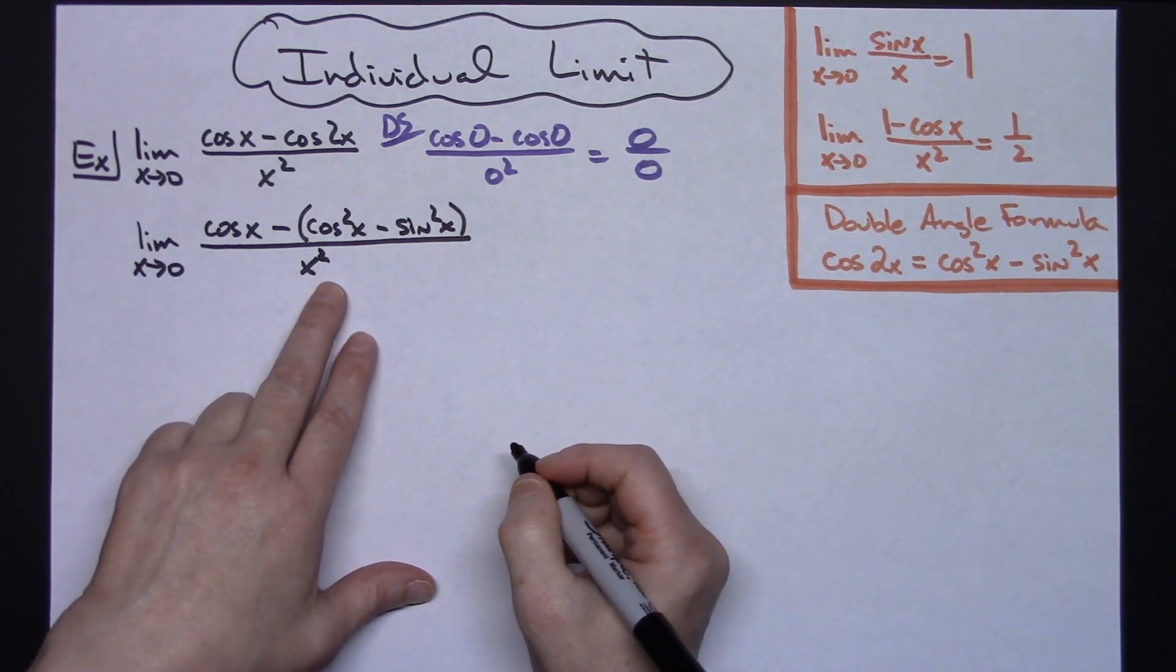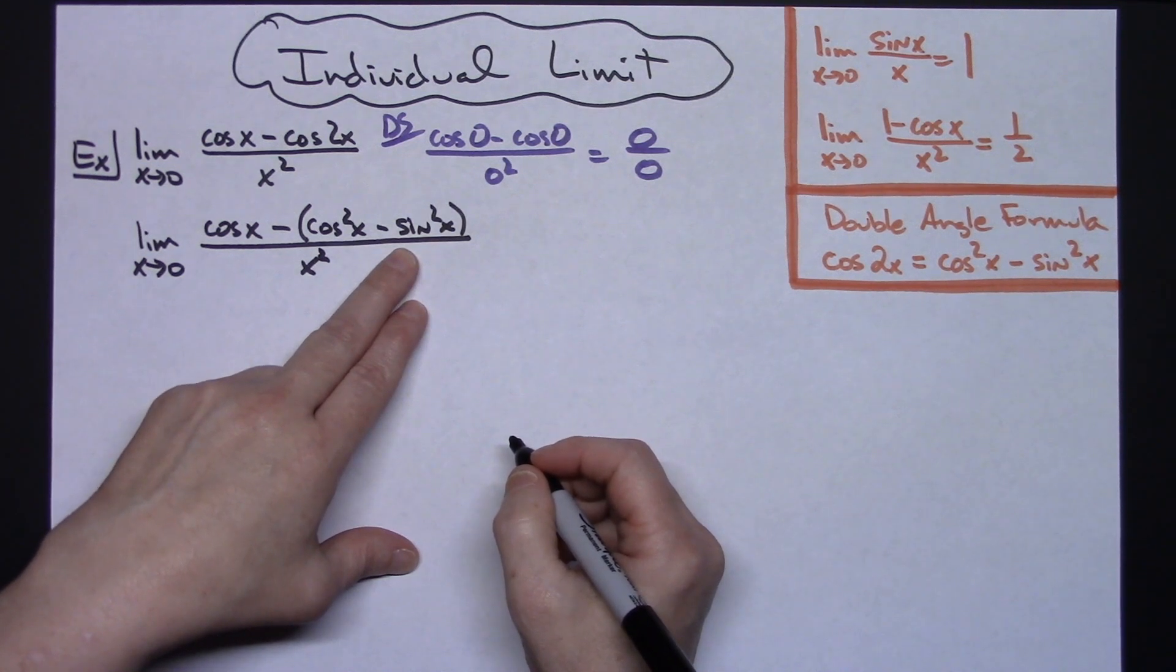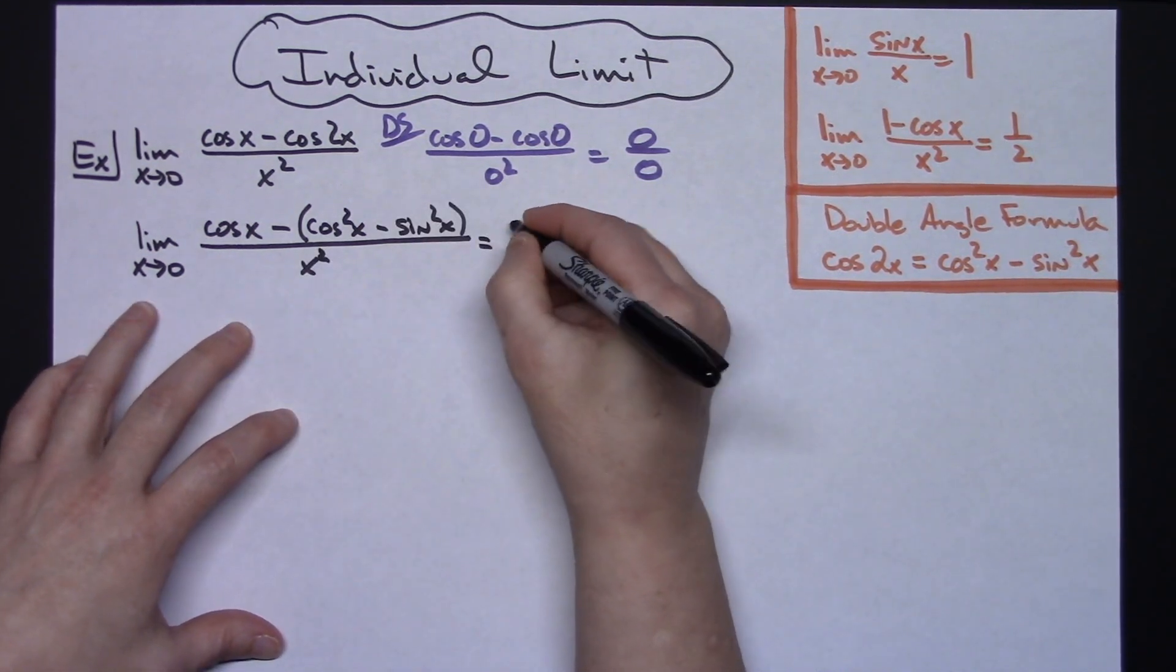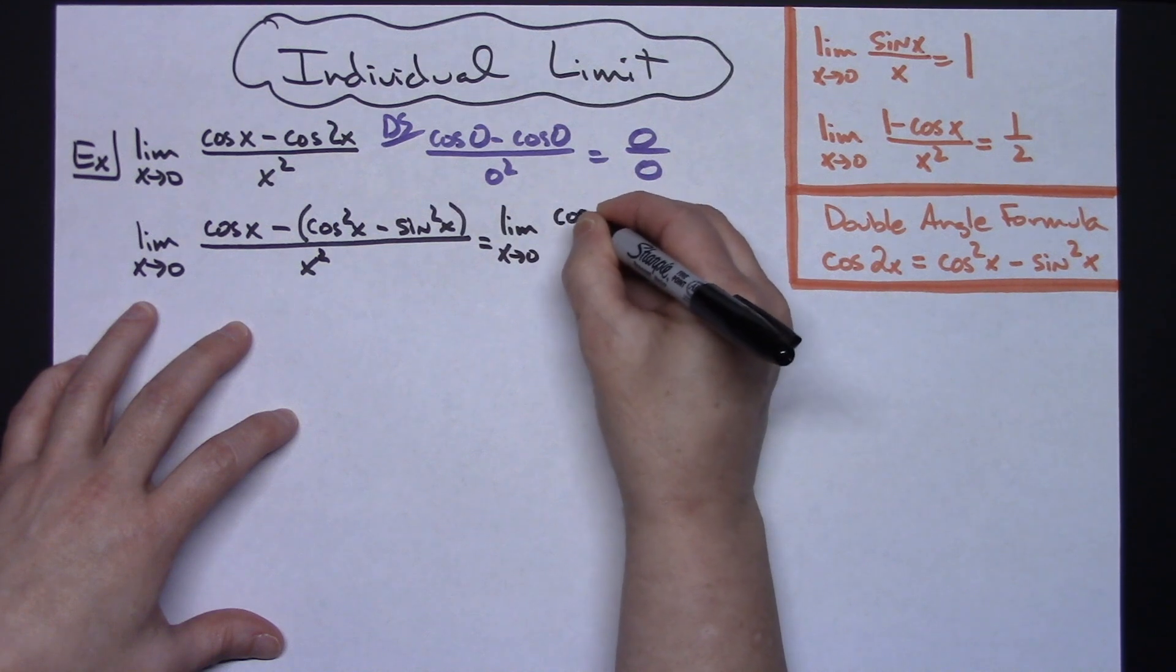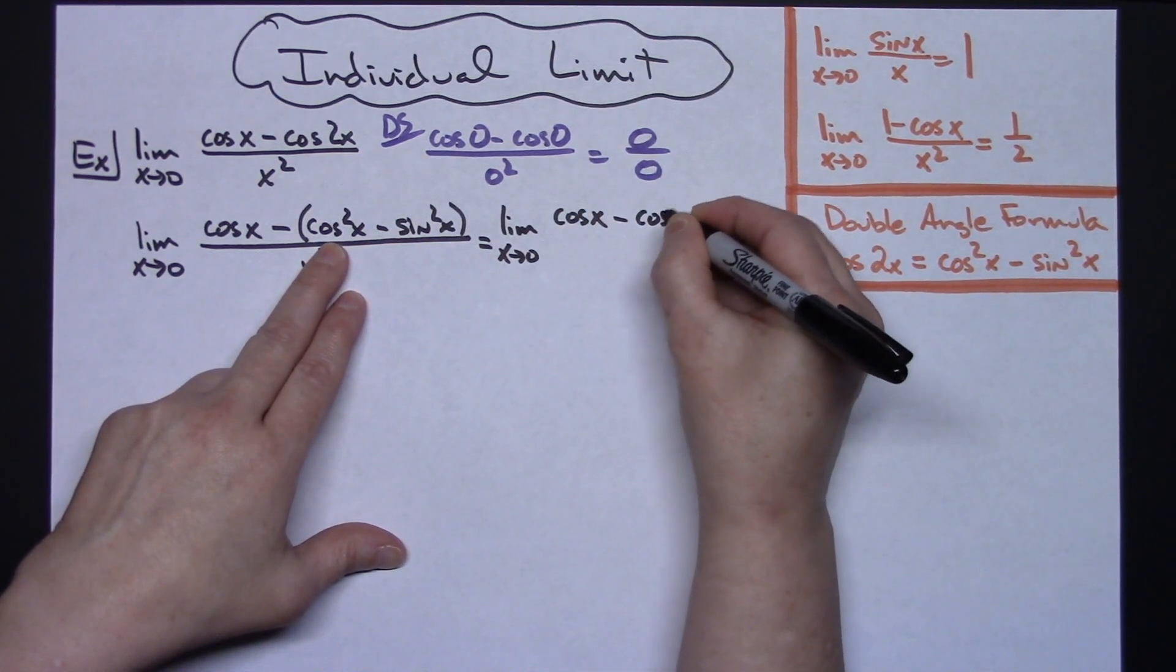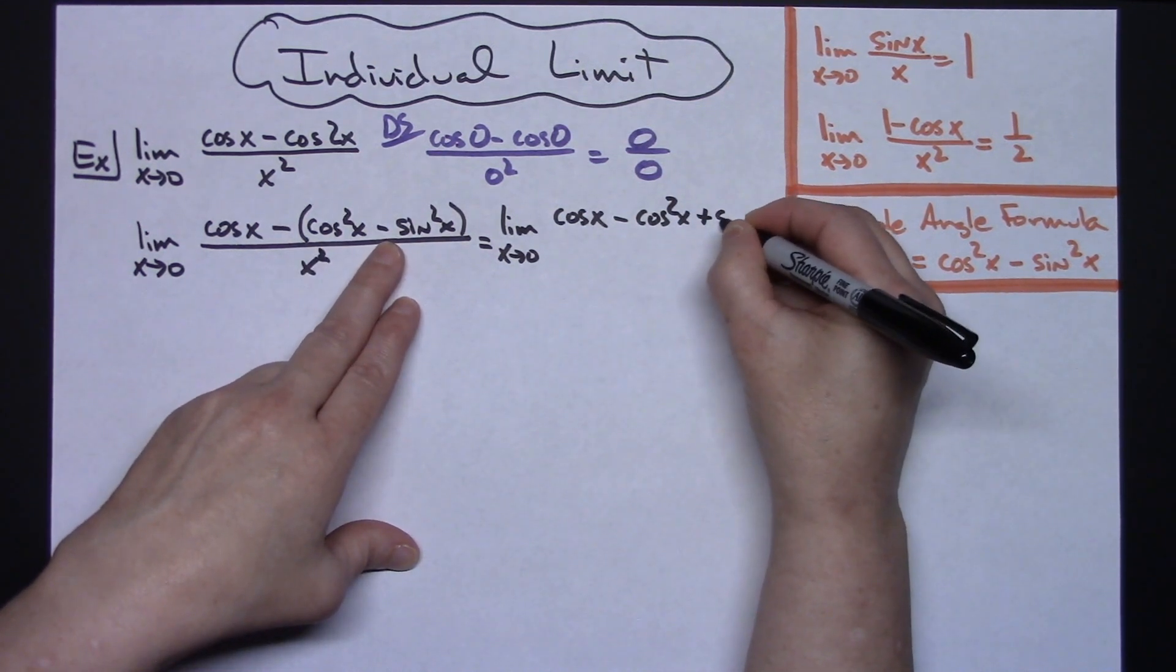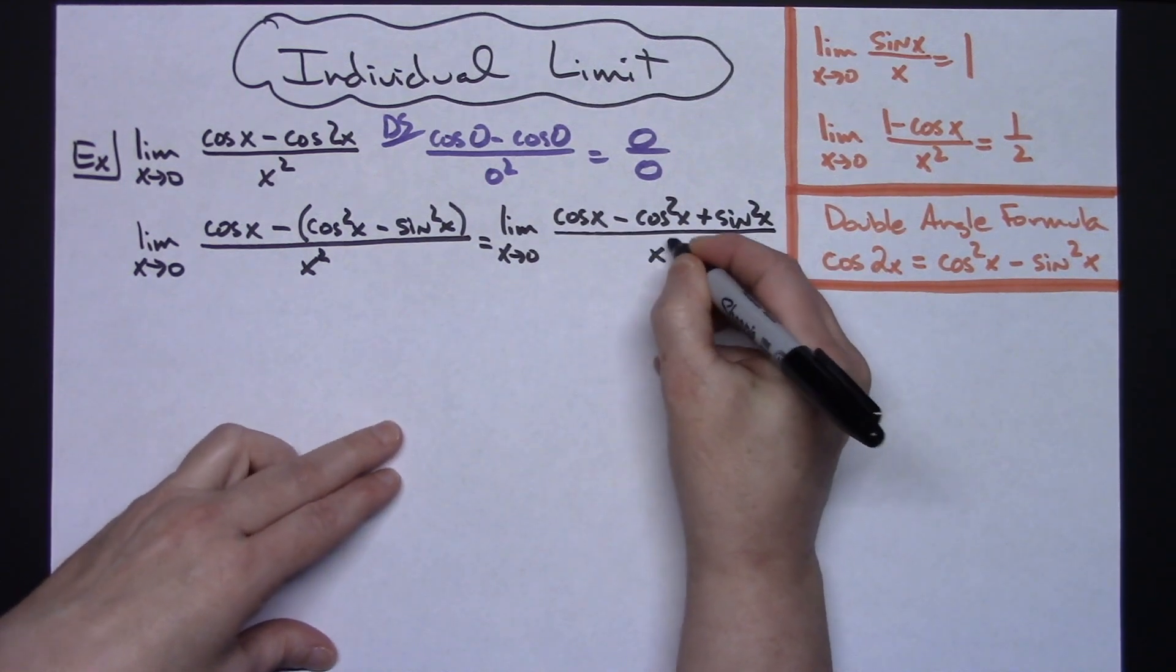In the next line, I'm just going to go ahead and distribute that out so that we can see what this is going to look like with our signs distributed. The limit as x approaches 0, I'll have a cosine x and then minus cosine squared x, and then minus times a minus there will give me a plus on my sine squared x, all over that x squared.